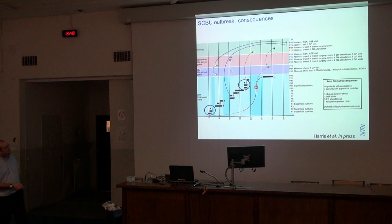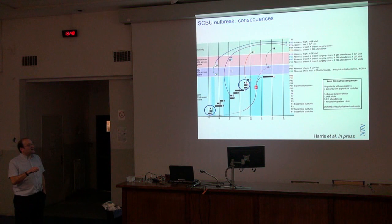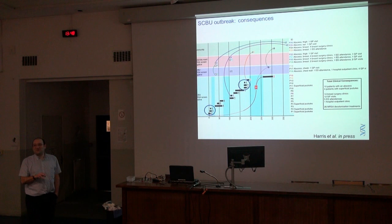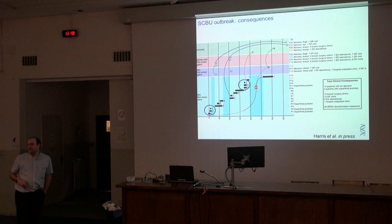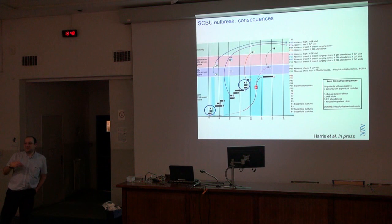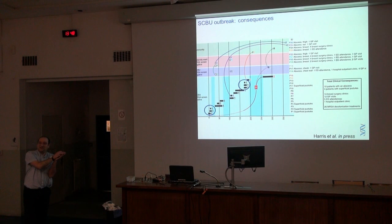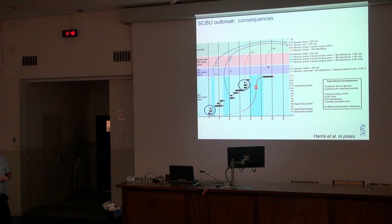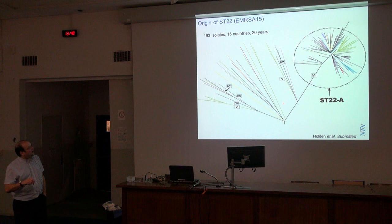Two key conclusions: first, this outbreak was first picked up at a late stage. If we had been doing routine sequencing — sequencing every positive swab in the hospital as it happened — we would have spotted the outbreak earlier and been able to prevent all the downstream transmission. The simple clinical consequences cost at least £10,000 just for treatment. By routine sequencing, you can stop these outbreaks before they spread. We're also doing a large global study of ST22 — which is MRSA15 — with about 500 isolates to understand this clone globally.